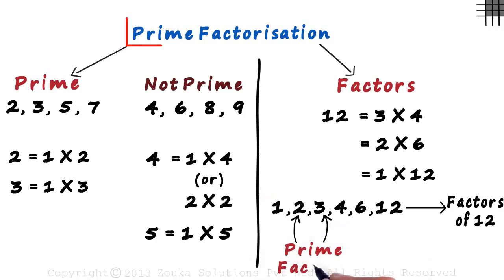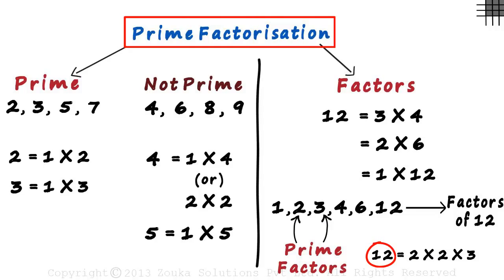So what does prime factorization mean? It means writing a number as a product of its prime factors. Writing 12 as 2 times 2 times 3 is prime factorization of 12. It is written as a product of its prime factors.